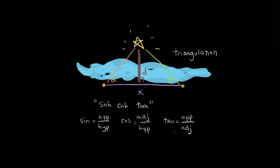Knowing these definitions, we're going to figure out how to find the distance d. For example, sine of alpha — this angle here — is opposite over hypotenuse, which would be d over the hypotenuse, this unknown length here. Now let's get on to the math part.